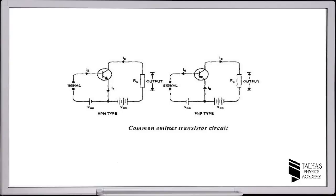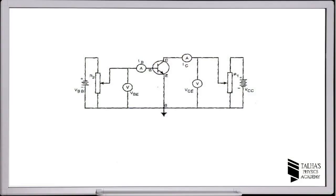In order to study the static characteristics for common emitter configuration, let us see its circuit. As you can see, two milliammeters are connected in order to measure the base current and collector current. A voltmeter is applied across the base and emitter junction to measure its voltage, and another voltmeter is connected to measure the voltage between the collector and emitter junction.